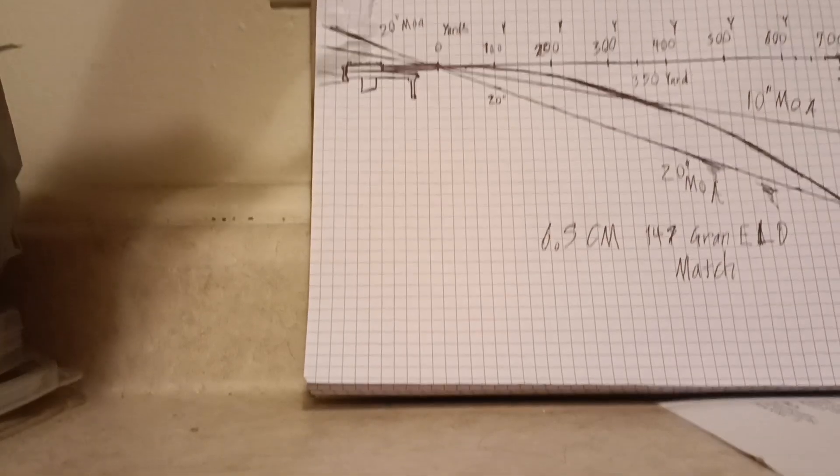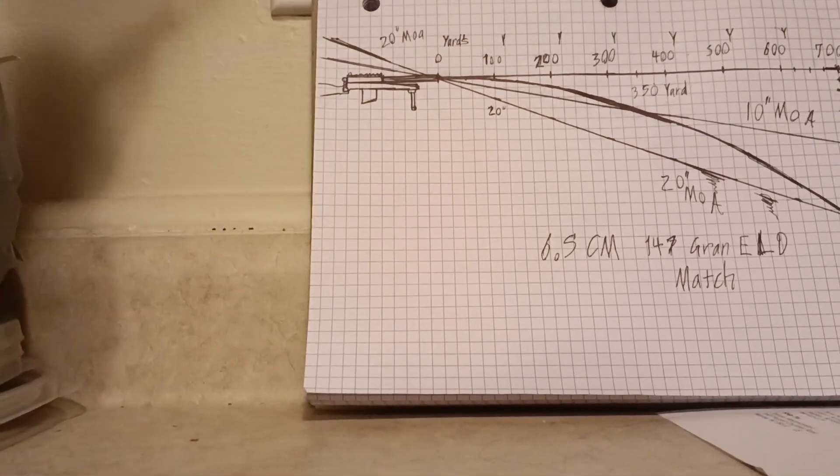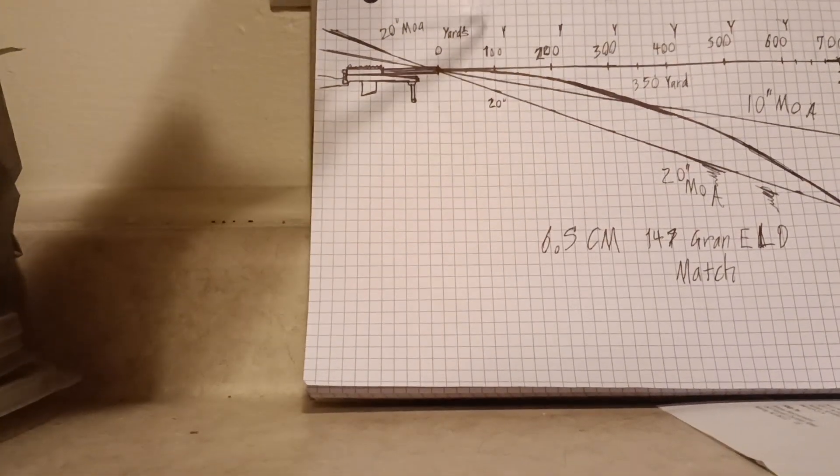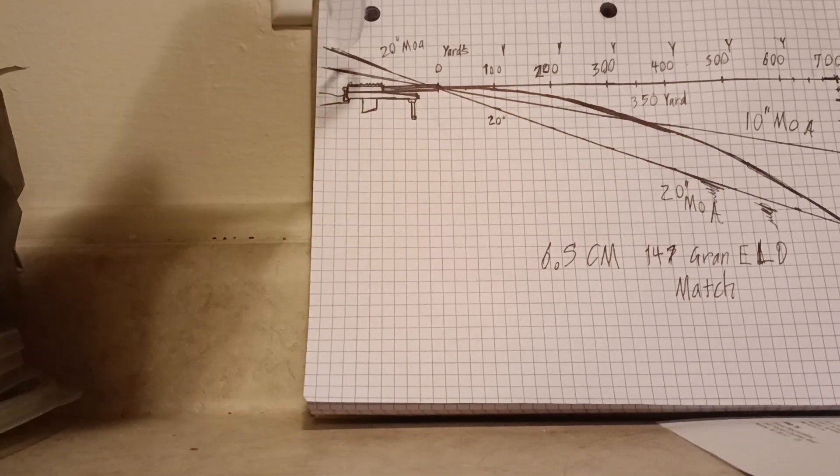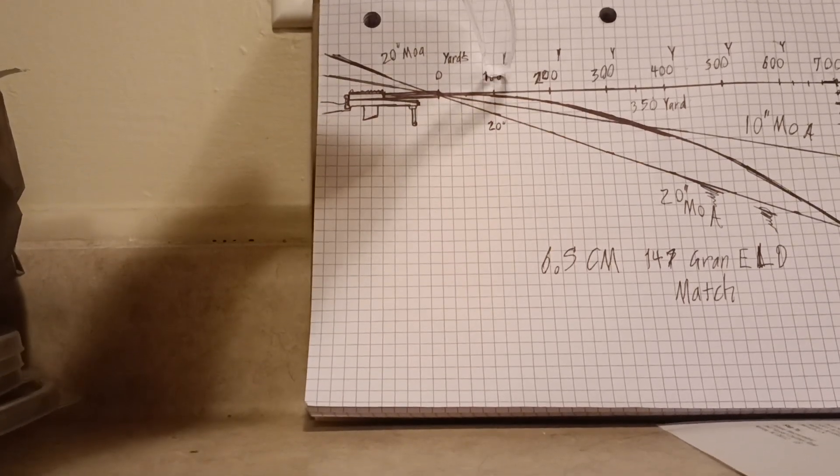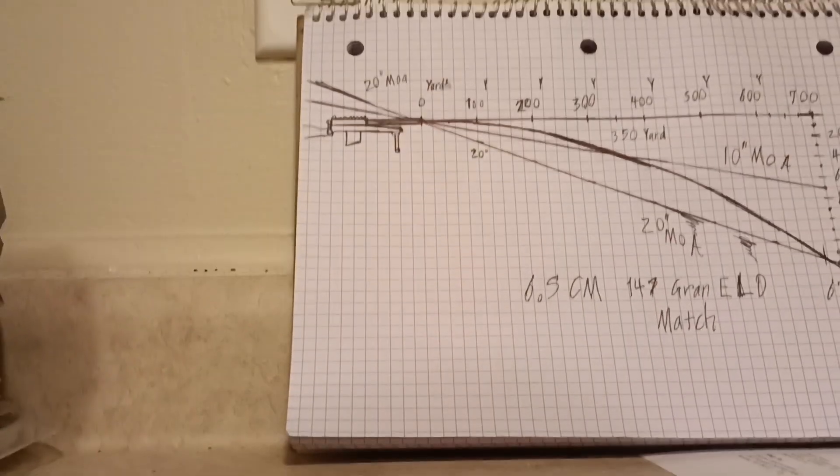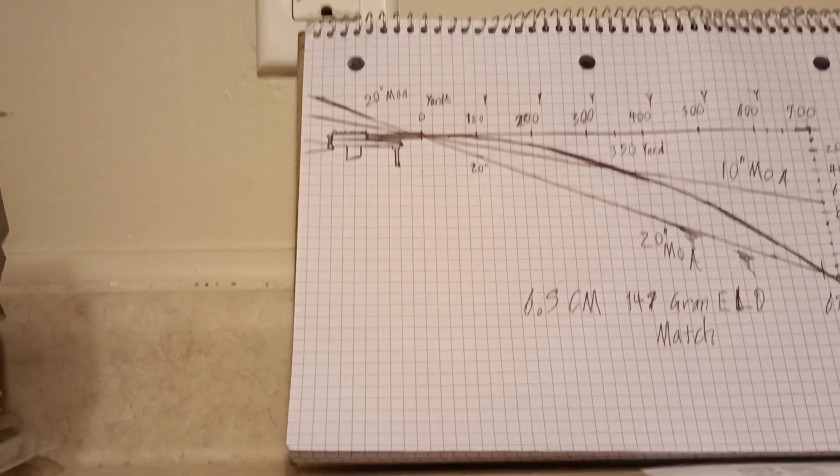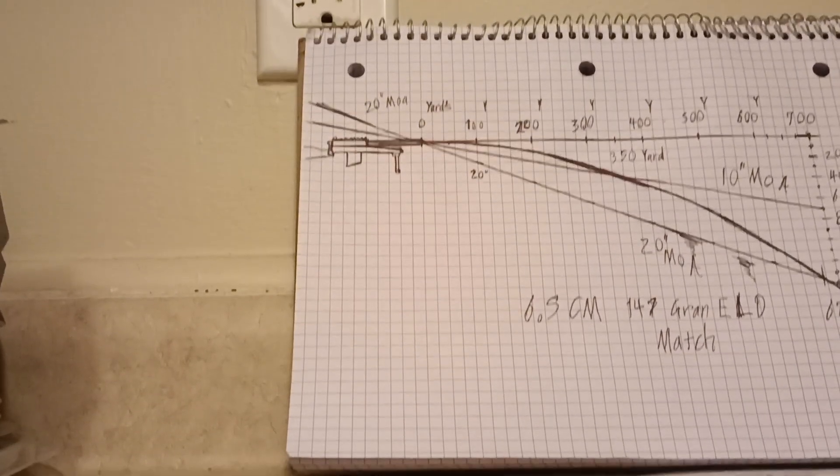With a standard mount with no MOA built in, you're never going to intersect your bullet until you move your scope down. In this scenario, it's roughly 4 inches down that we have to move the scope to align it, which is 16 clicks.